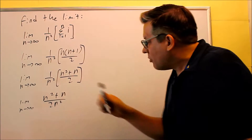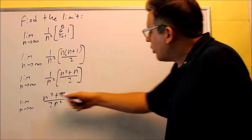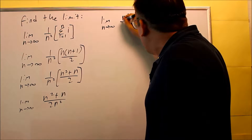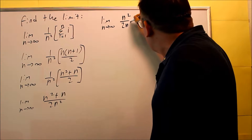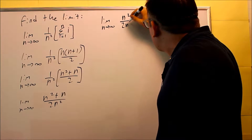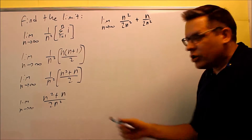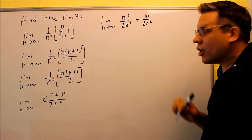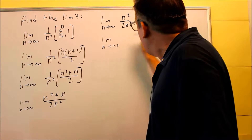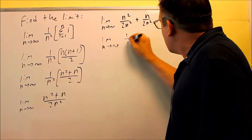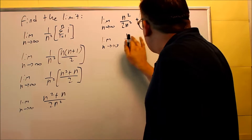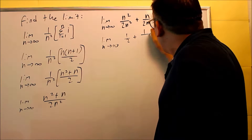Now in order to calculate this limit, what you want to do is break this apart into two different ones. We're going to take the limit as n goes to infinity of n squared over 2n squared plus n over 2n squared. We're allowed to split this up because we have only one term on the bottom. When I simplify this, the first part is going to be just one half, and the second part is going to be 1 over 2n.